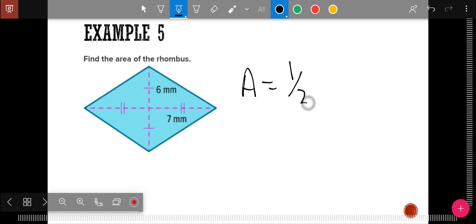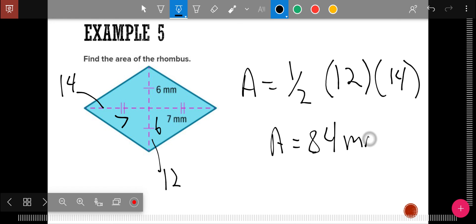And so for this one, I want to do one half, diagonal one, times diagonal two. Now, this is tricky. This six is with that dash, so this one down here is also six. And so the whole thing here is 14. So that's how I'm going to type it into my calculator. And I get the area is 84 millimeters squared.